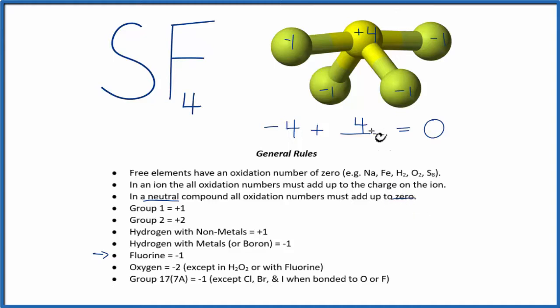So to recap, we found the oxidation numbers for the elements we knew, the fluorines in this case, and then we use that plus the fact that we have a neutral compound, and all of the numbers will add up to zero to find the sulfur in sulfur tetrafluoride. This is Dr. B with the oxidation numbers for SF4, and thanks for watching.